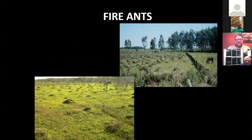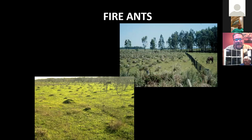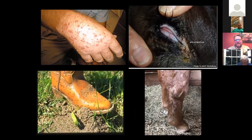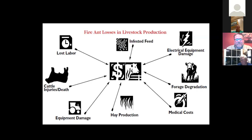Fire ants — they are a huge challenge. They are expensive, cut into production, and cause damage to mowers and hay equipment, making them very economically devastating to forage producers. There are a number of ways they adversely affect the economics of our livestock and forage production operations.